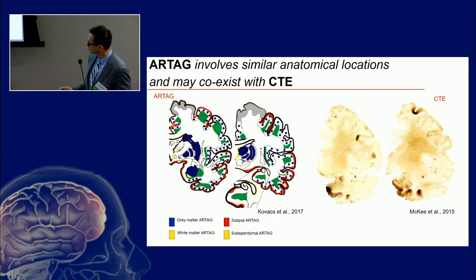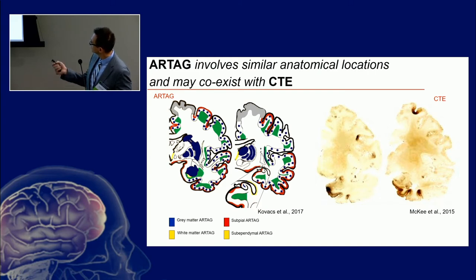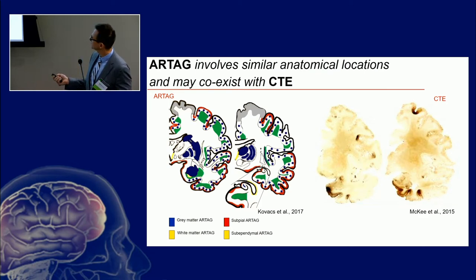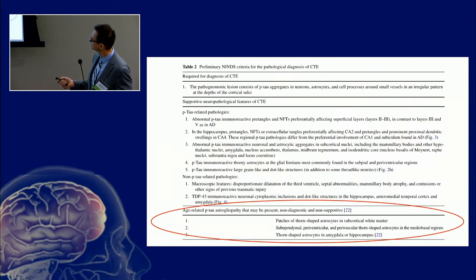Green represents white matter, blue is gray matter, red is subpial, and yellow is subependymal. For visual comparison, this is how CTE looks like in the hemisphere. It seems there is a pretty significant overlap between the location of CTE pathology and the location of ARTAG seen in a mixed cohort of all kinds of diseases.